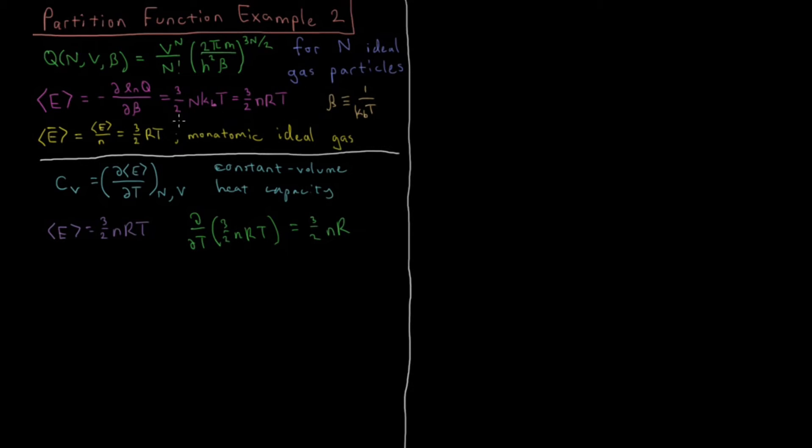So for a monatomic ideal gas, we have the relationship that our heat capacity is going to be 3 halves times the number of moles times the gas constant. And that is very close to what you would measure empirically for a monatomic ideal gas. This is another kind of classical relationship that you observe in thermodynamics. It's observed empirically and it's also justified theoretically using this type of statistical mechanical approach.